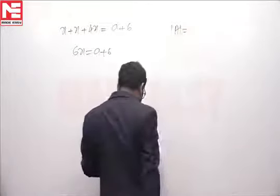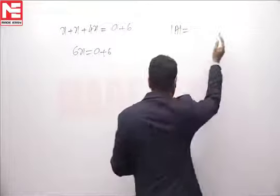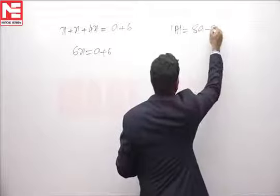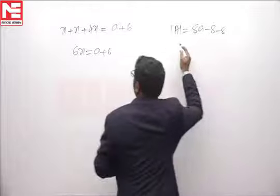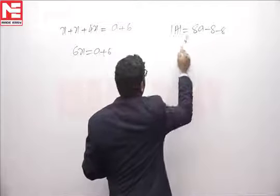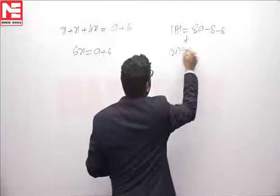Determinant value of A is 8A minus 8 minus 8, that is equal to product of eigenvalues, this is equal to x into x into 4x.